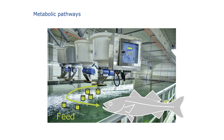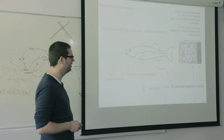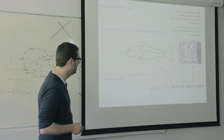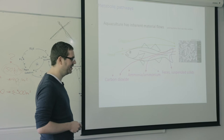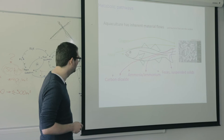Now we get to the part that's interesting for you. You want nitrate for your plants and it all starts with the feed going into our fish. This is the material flow: they get oxygen and feed, they excrete carbon dioxide and ammonia, and we also have feces — some are working on biogas from the feces. We have dissolved organic matter that goes into the bacteria and they grow. If we have no purification, bacteria will compete with the fish and we don't want this.